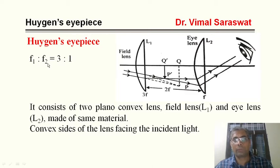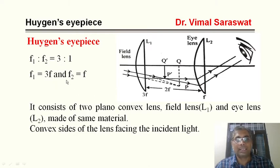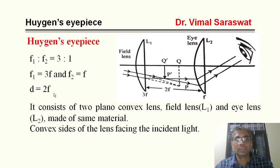Let the focal length of the field lens be F1 and the focal length of the eye lens be F2. The ratio of focal lengths of the field lens to the eye lens is 3:1. Both lenses are placed at a distance of 2F, where F2 = f.